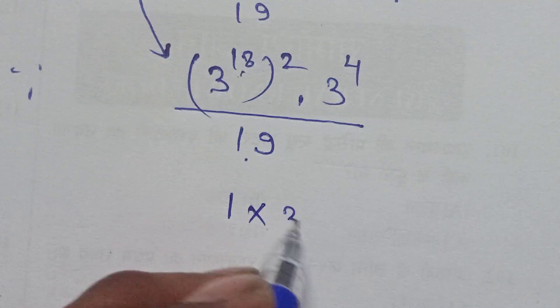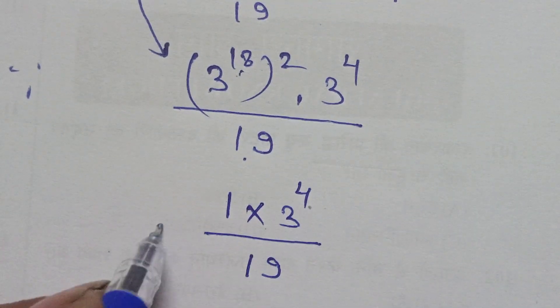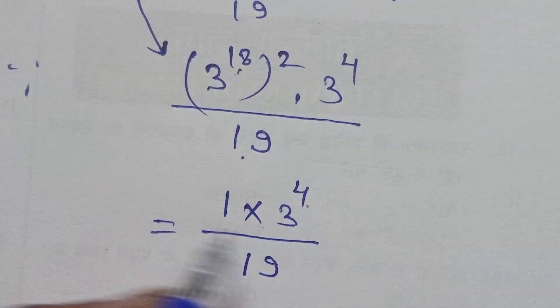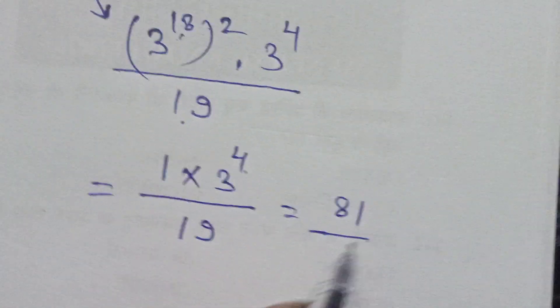Therefore 3 to the power 4 divided by 19 - 3 to the power 4 is equal to 81 divided by 19, therefore remainder will be 5.